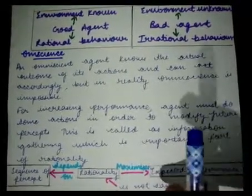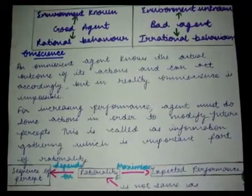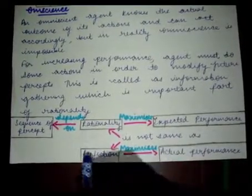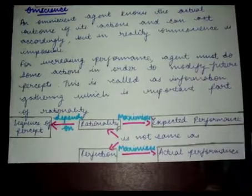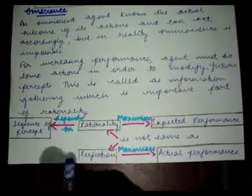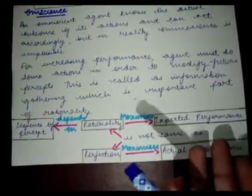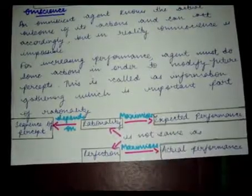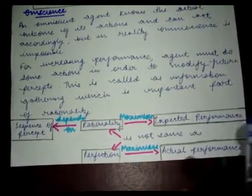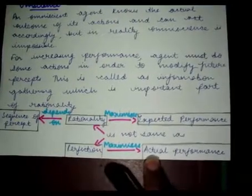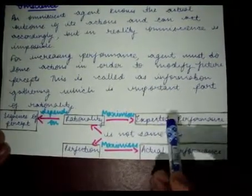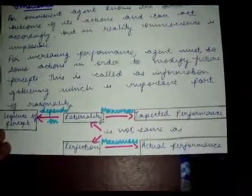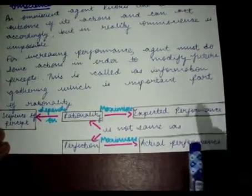To increase performance, an agent must perform actions to modify future percepts — this is known as information gathering, which is an important part of rationality. Rationality depends on the sequence of percepts and maximizes expected performance. Omniscience or perfection does not depend on a sequence of percepts, because the agent actually knows what's going to happen, allowing it to maximize actual performance. In rationality, we say 90% accurate decisions will be taken; in perfection or omniscience, 100% accurate decisions will be taken.